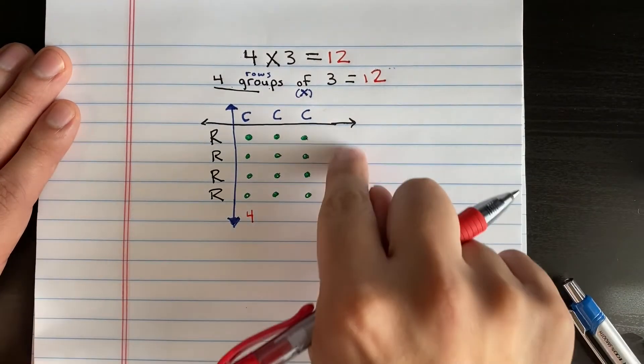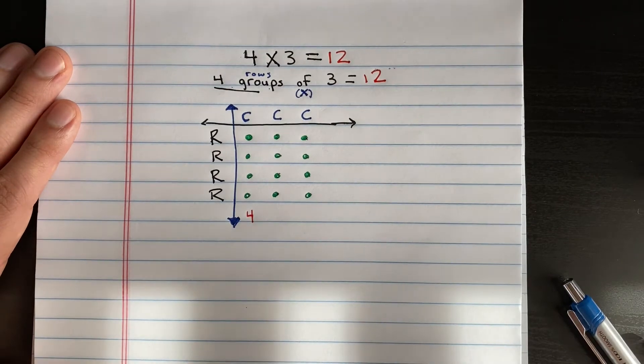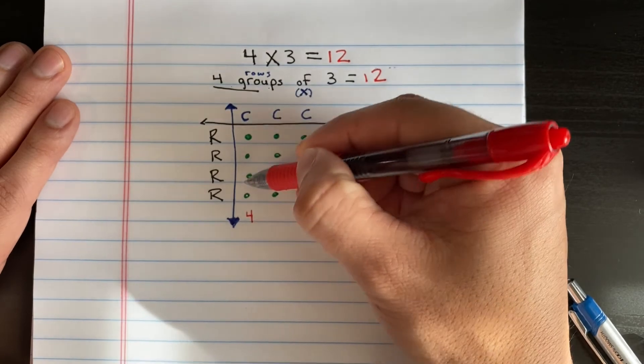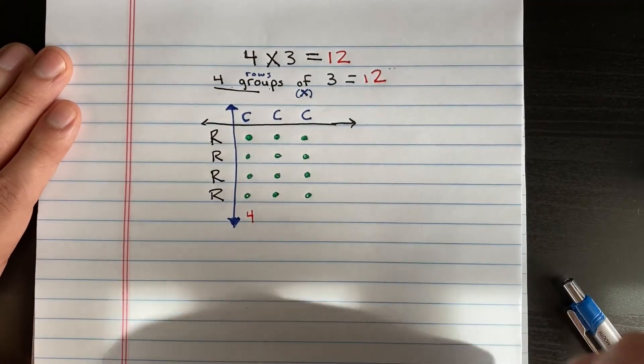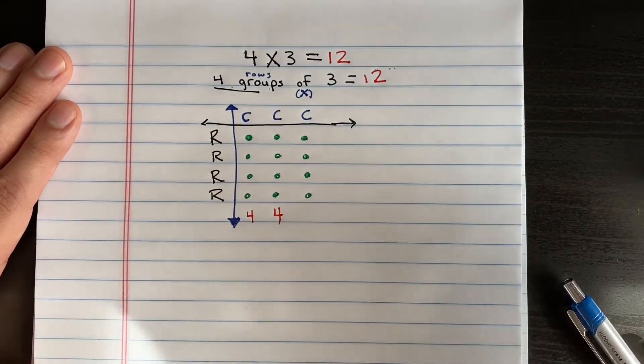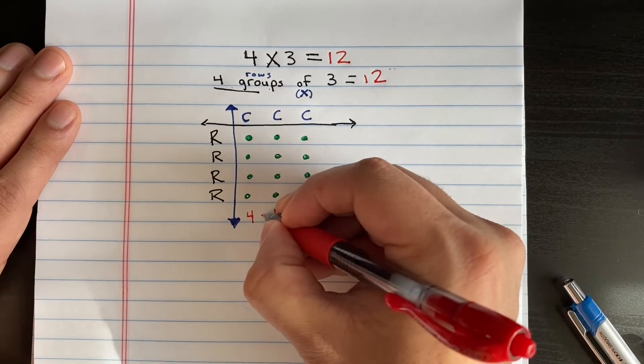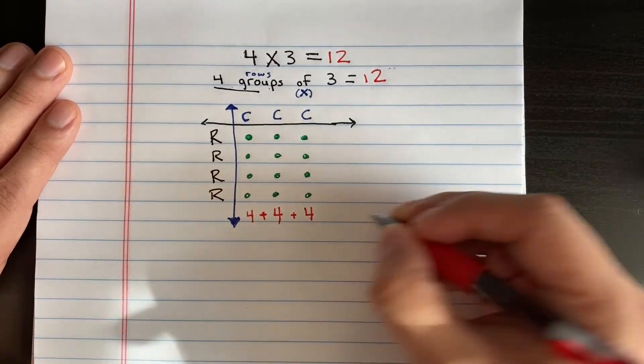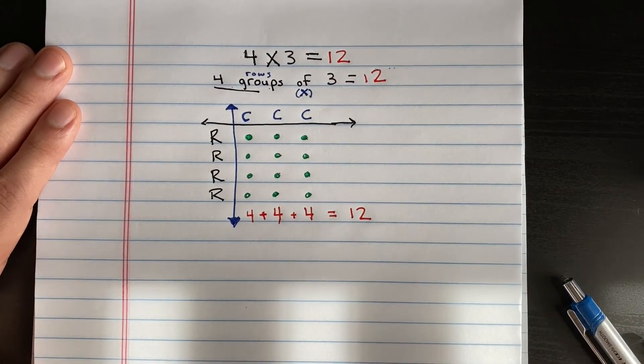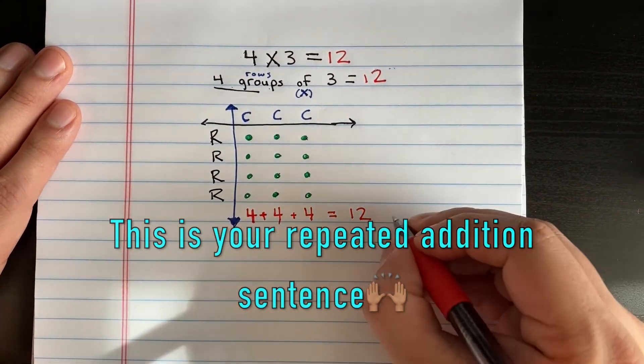However, there is a faster way than having to be able to count them all up and taking forever. You could just do your repeated addition sentence. So as you can see, in this column here, remember columns go up and down, I have four. In this column, I have another four. I know that four plus four is eight. And then in this column, I have another four. So I could put my repeated addition sentence, four plus four plus four, and that equals twelve. To me, that's just a little bit easier than having to count them all together.